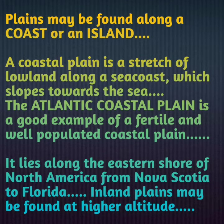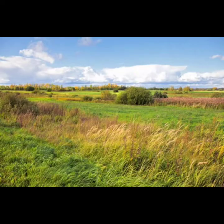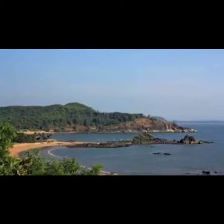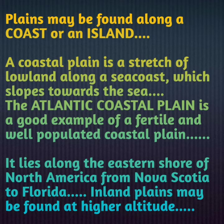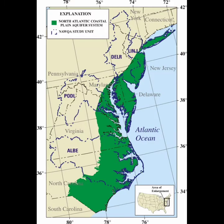The Atlantic coastal plain is a good example of a fertile and well-populated coastal plain. It is very fertile and has a very good population. It lies along the eastern shore of North America, from Nova Scotia to Florida.